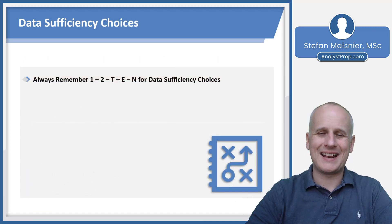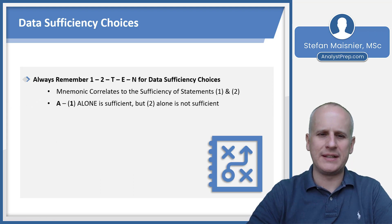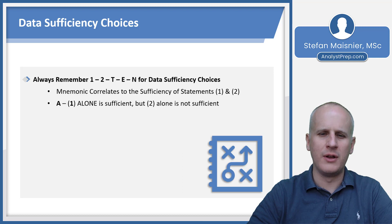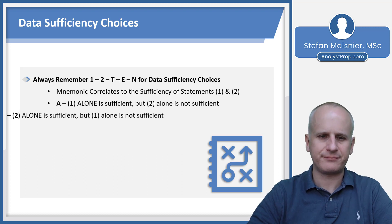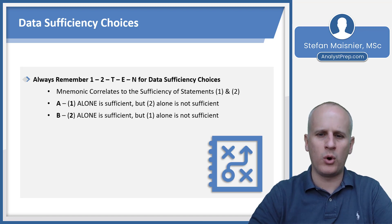The data sufficiency choices can be memorized using the mnemonic device 1, 2, 10 — where 'ten' is spelled out as T-E-N. This directly correlates to the sufficiency of the statements either independently or in combination. Choice A correlates to the '1' in 1, 2, 10, and indicates that statement 1 is sufficient to answer the question, but 2 alone was not sufficient. Choice B means the reverse — that 2 alone was sufficient to determine a single value or a single answer of yes or no, but 1 alone was not.